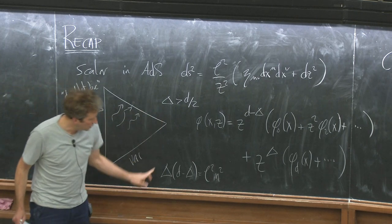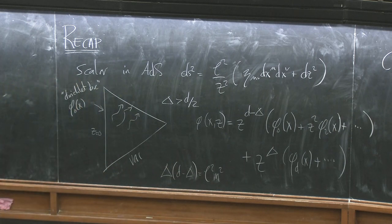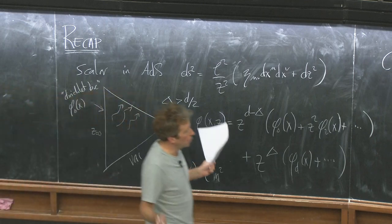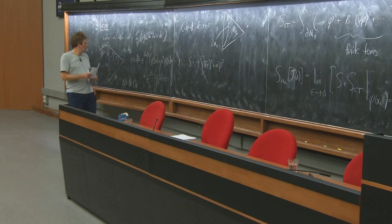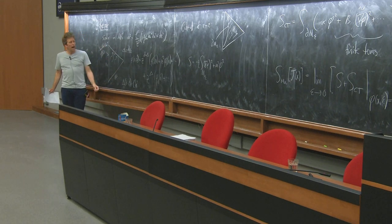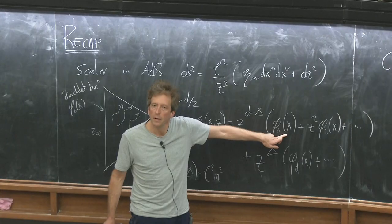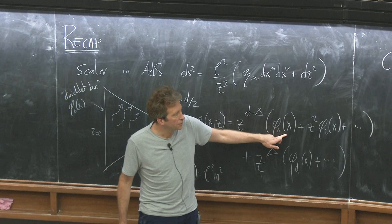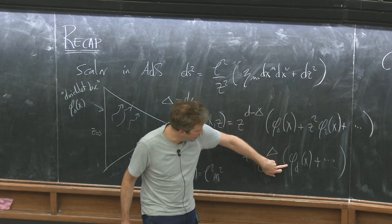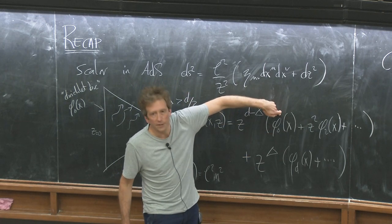The two bits of data — Dirichlet and Neumann data — are this function phi_0, the leading falloff, and the subleading falloff phi_d. This function determines terms up to the power where the subleading kicks in; then you have this undetermined data, and subsequent terms depend on both. Delta is the larger root of a quadratic determined by the mass of the field. We then imposed the vacuum condition that we don't have any radiation coming in through the past null surface, which relates phi_0 to phi_d as an integral against some kernel.